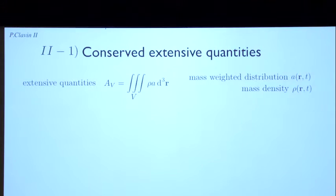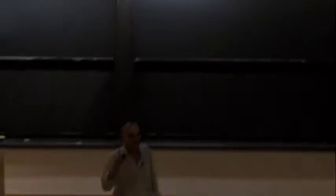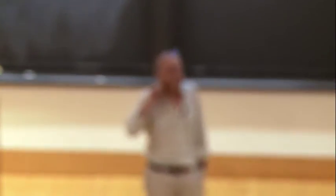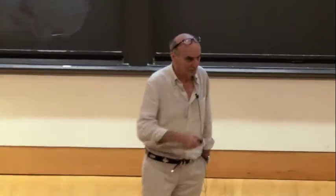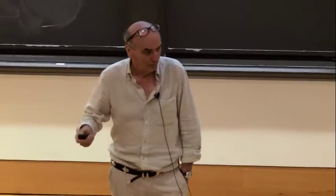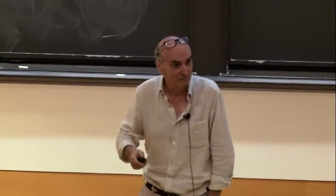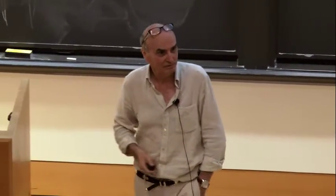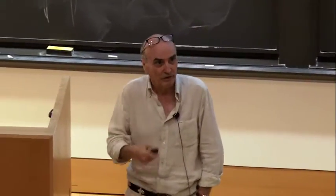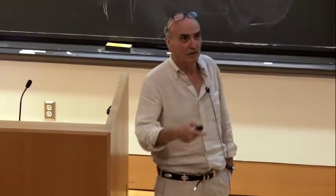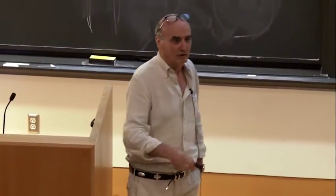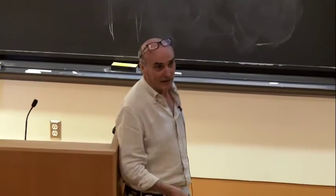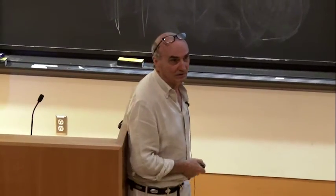Give me an example of a quantity which is not extensive. Temperature. Temperature, pressure — not extensive. But energy and mass are extensive quantities.